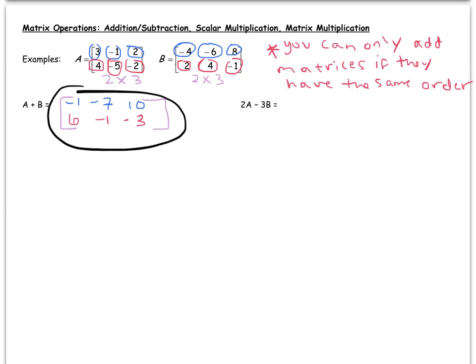Let's look at this last example, 2A minus 3B. So now we're mixing addition and subtraction of matrices with the scalar multiplication. So 2 times matrix A. I'm going to actually write this out. 2 times matrix A would be 2 times this matrix here: 3, negative 1, 2, 4, negative 5, negative 2. And then I'm going to subtract 3 times my matrix B, which is negative 4, negative 6, 8, 2, 4, negative 1.